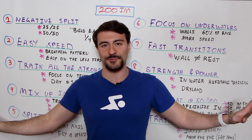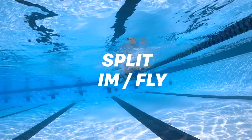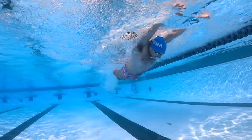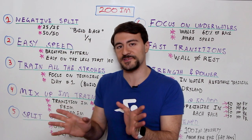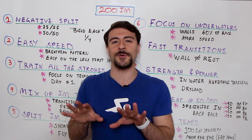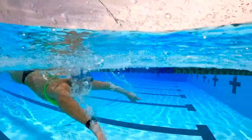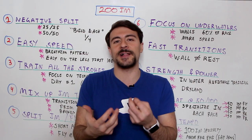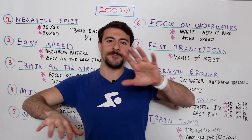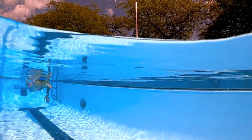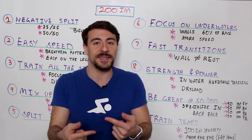Tip five: split up the IM and butterfly training. Butterfly is very exhausting, and the same applies to breaststroke. I recommend training them on their own rather than only within IM sets. If you only train butterfly within the IM, it sacrifices speed on backstroke, breaststroke, and freestyle. Do a lot of frim — freestyle, backstroke, breaststroke, freestyle — to develop easy speed, and train fly separately at full speed so you can carry that speed into the race.